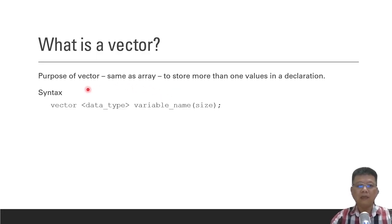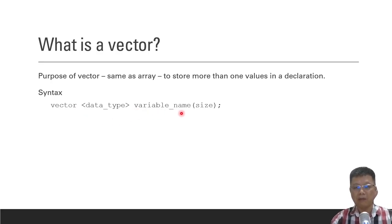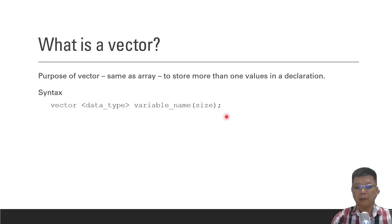The syntax for declaring a vector is simple. We just have to include the vector keyword, then specify the data type of the vector — probably integer, string, or characters — then give it a name, and optionally specify the size of the vector. Don't forget the semicolon.